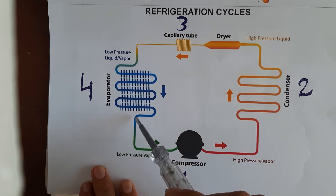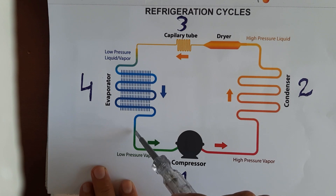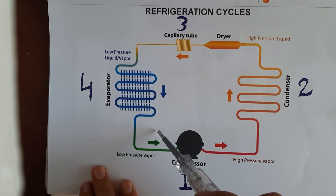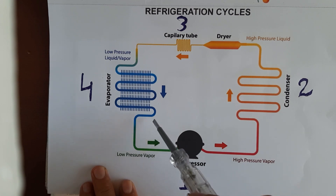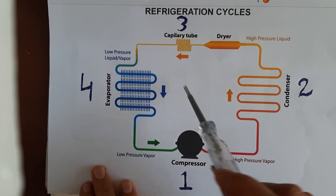After the evaporator, that vapor goes back into the compressor. The compressor compresses it and releases it with high temperature and high pressure, it goes into the condenser, then into the capillary, then into the evaporator, and back to vapor form again in the compressor — and this is how the refrigeration cycle completes.